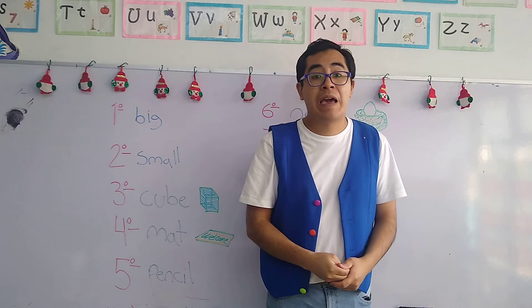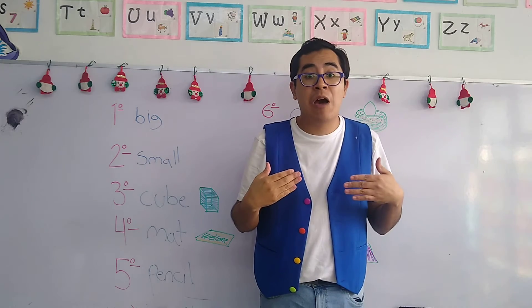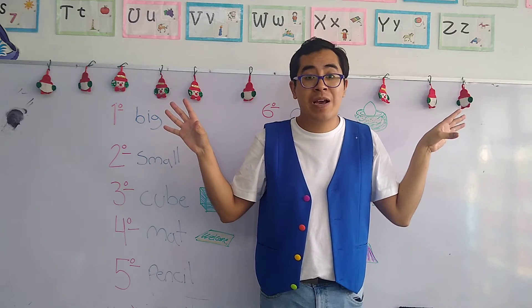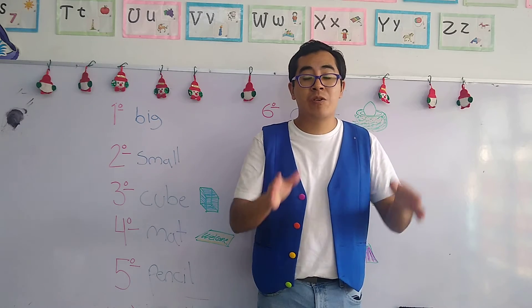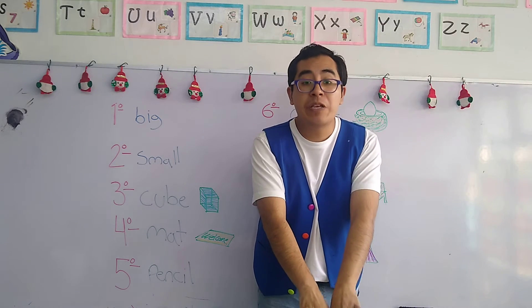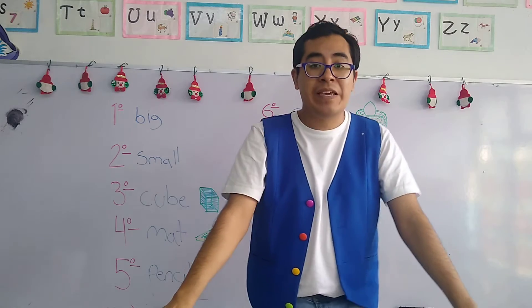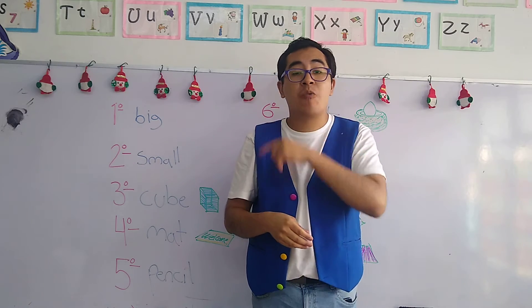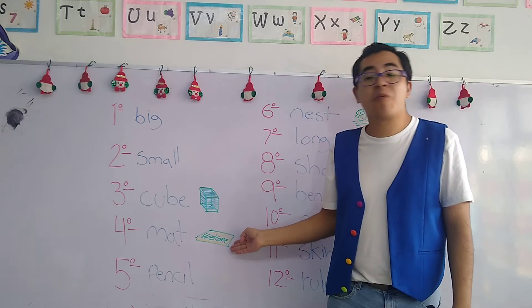Now for number four, we have "mat." Remember, the mat is an object that we put in front of our house. When we are on the street — cuando estamos en la calle — all of our shoes are dirty. So, in order to enter a clean house, we put in the front a mat — ponemos en el piso, en frente de la casa, un tapete — so we can clean our shoes and then enter the house. The word "mat" in Spanish means tapete.